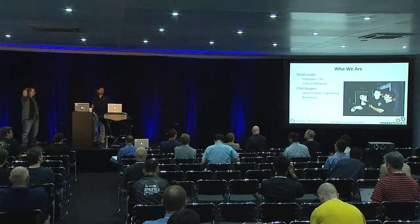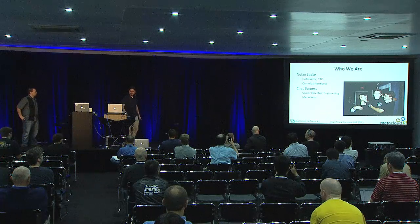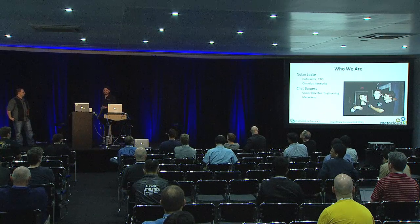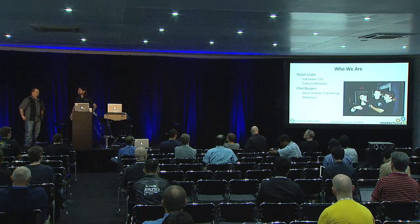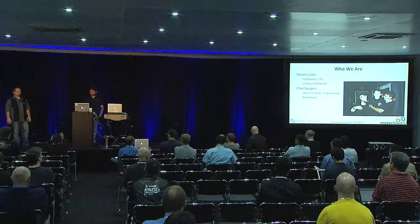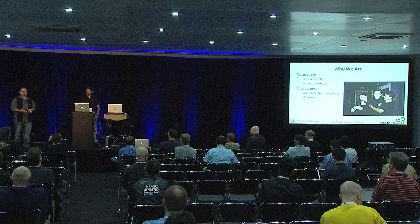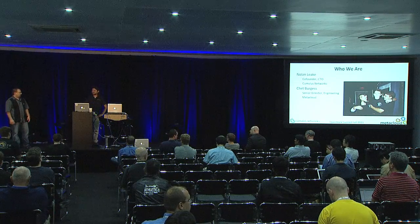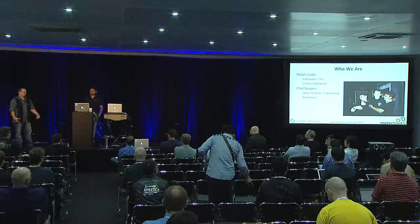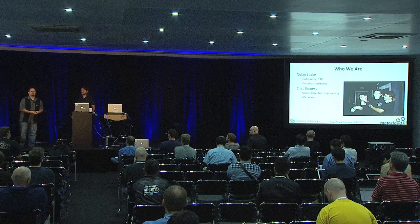My name's Nolan Leak. I'm the co-founder and CTO of Cumulus Networks, which is a network operating system company that makes a distribution of Linux that runs on a wide variety of hardware platforms. This one right here is from our friends at Quanta. And it is very much Linux-centric, as you'll see soon enough. My name is Chet Burgess. I'm the Senior Director of Engineering at Metacloud. Metacloud is an OpenStack solutions company. We design and build OpenStack clouds for our clients, and then we do 24 by 7 maintenance, administration, monitoring, and bug fixing for them. Today we're going to talk to you about using switches that are basically running Linux, and how if we have Linux on the switch, we can do some interesting things with Neutron on the switching platform itself.